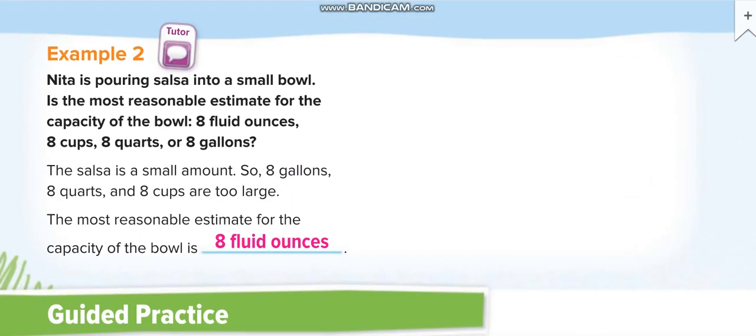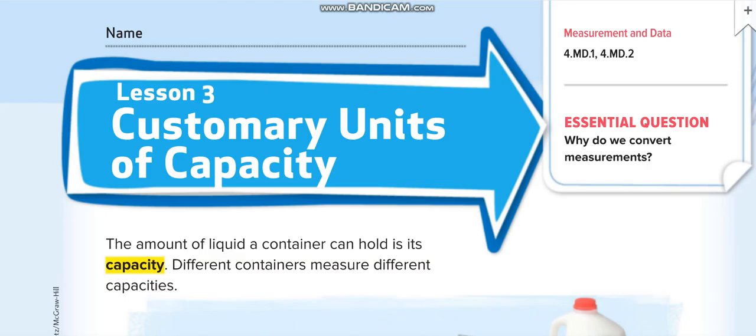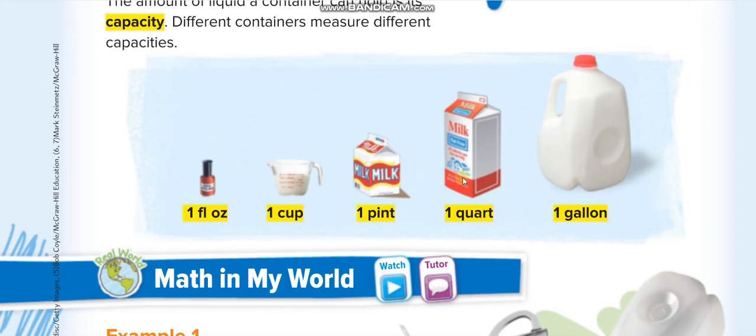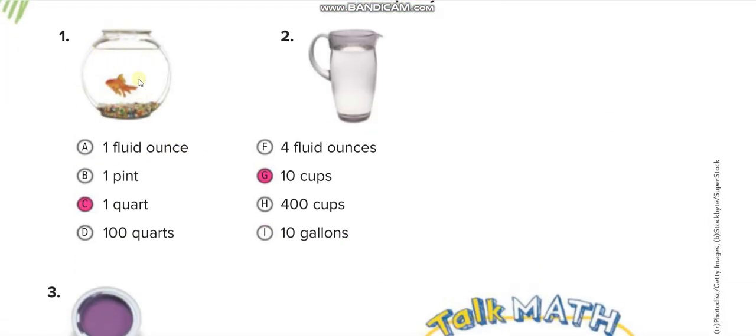Nita is pouring salsa into a small bowl. What is the most reasonable estimate for the capacity of the bowl: eight fluid ounces, eight cups, eight quarts, or eight gallons? If it is a small bowl, can we fill it with eight cups? That's too much. We can fill it with eight fluid ounces. For this small jar: one fluid ounce will be very small, one pint will fill it almost half, so one quart, which is two pints. Here, four fluid ounces will be very little for this jug. The reasonable estimate is 10 cups.